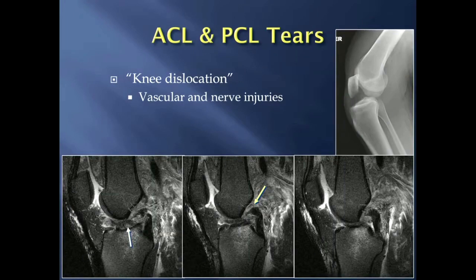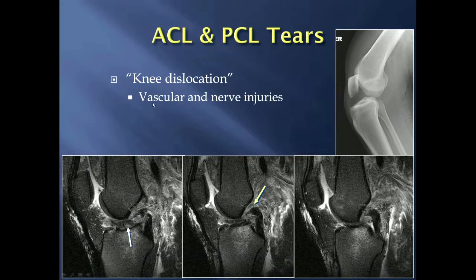You can have combined anterior and posterior cruciate ligament tears, often called a knee dislocation because of the degree of dislocation required to rupture both. The key concern is that vascular and nerve injuries can occur with a dislocated knee, so orthopedic surgeons will check for pulses and distal sensation, because additional surgeries beyond ligament reconstruction may be required if there is vascular or nerve injury.